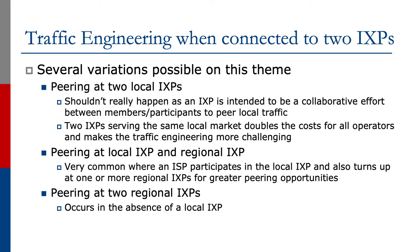We could be peering at two local IXPs, though this shouldn't really happen as an IXP is intended to be a collaborative effort between members to peer local traffic. Two IXPs serving the same local market doubles costs for all operators and makes traffic engineering more challenging. It might also be a case where we're peering at a local IXP and a regional IXP, which is very common. Or we could have the case where we're peering at two regional IXPs, which occurs in the absence of a local Internet Exchange Point.